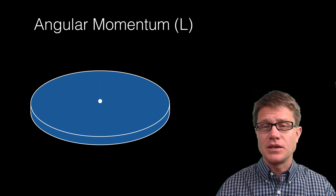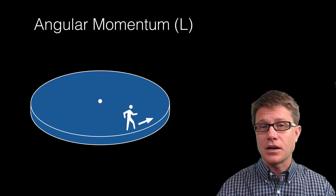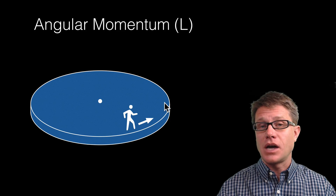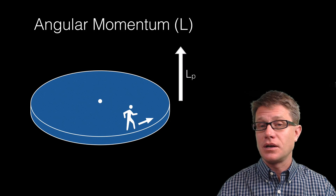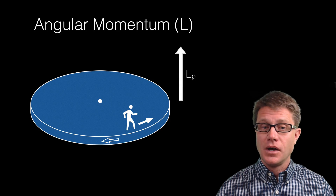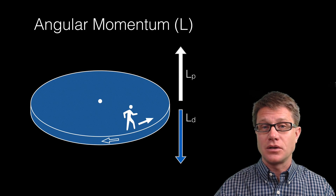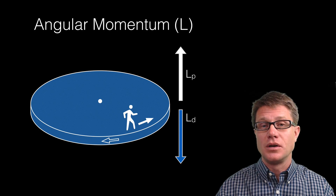Now let's look at angular momentum — here's a thought experiment. Imagine a big frictionless disk and you start to walk on it in a certain direction. You're a point object moving in that direction, so you start to have angular momentum; using the right-hand rule, it points up. By Newton's third law, you apply a force to the disk and it applies a force back on you, so the disk moves in the opposite direction. Its angular momentum therefore points in the opposite direction. Since the system started with no angular momentum, the sum of both angular momentums equals zero — they cancel each other out.